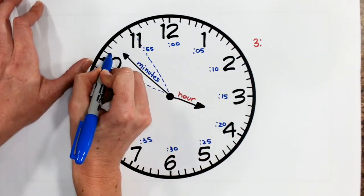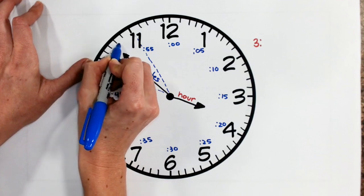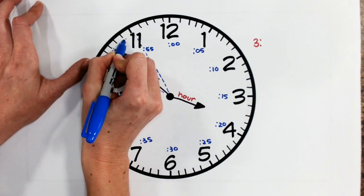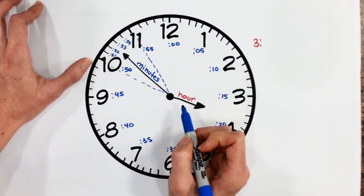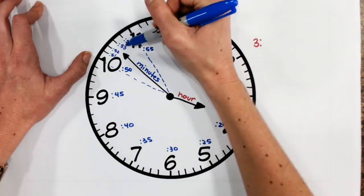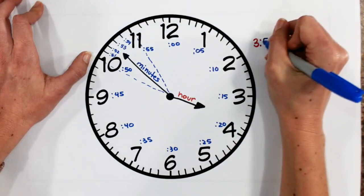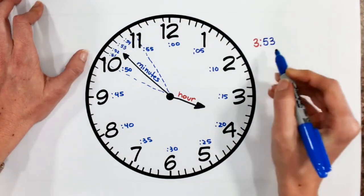So from 50, I'm going to label 51, 52, 53, 54. So I can see here that my minutes hand is at the 53 mark. So 3:53 is my time.